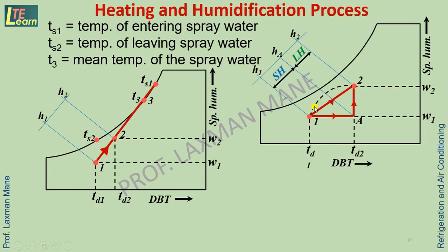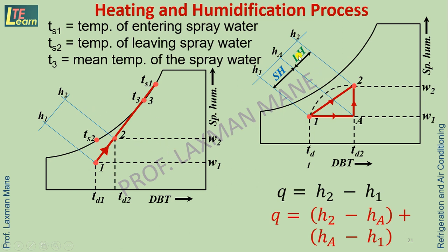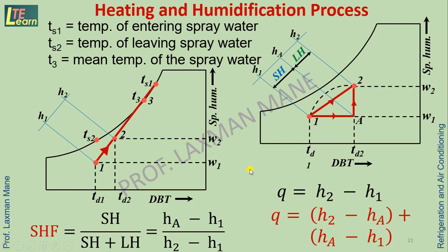Heating and humidification process: in this case, the temperature of the spray water is T3. Heating occurs from point 1 to 2. The amount of heat added to the air is H2 − H1 (total heat), which is split into two parts — sensible heat (Ha − H1) and latent heat (H2 − Ha). The sensible heat factor is the ratio of sensible heat to total heat (sensible heat plus latent heat).